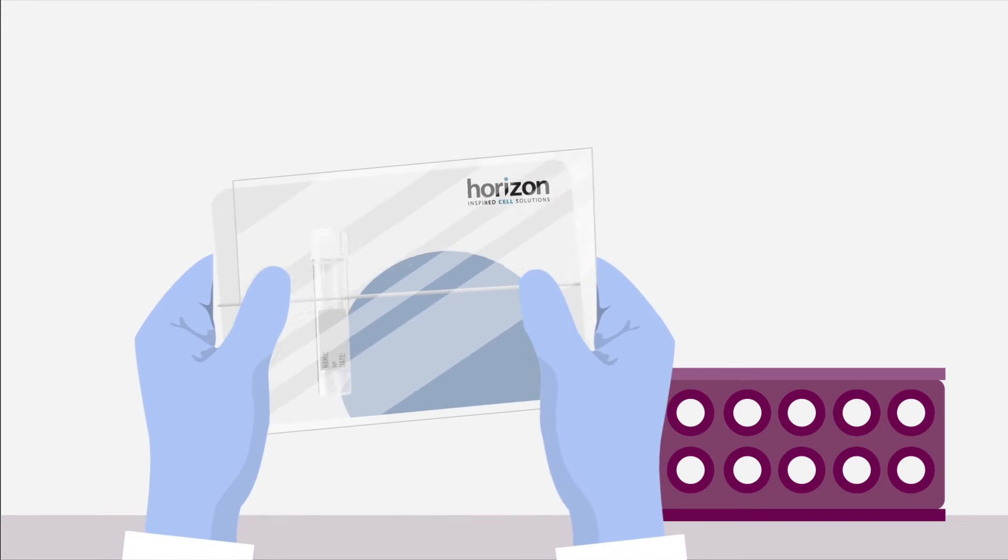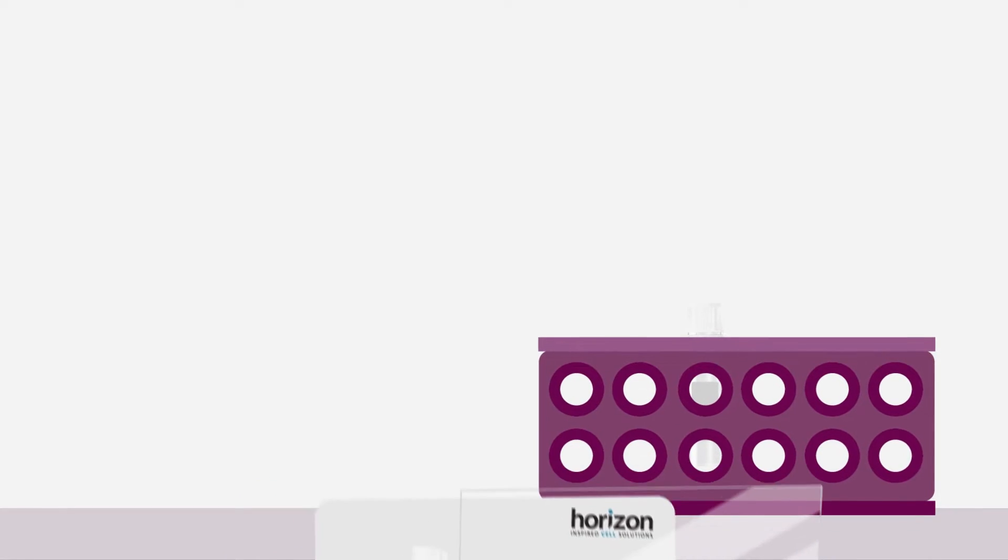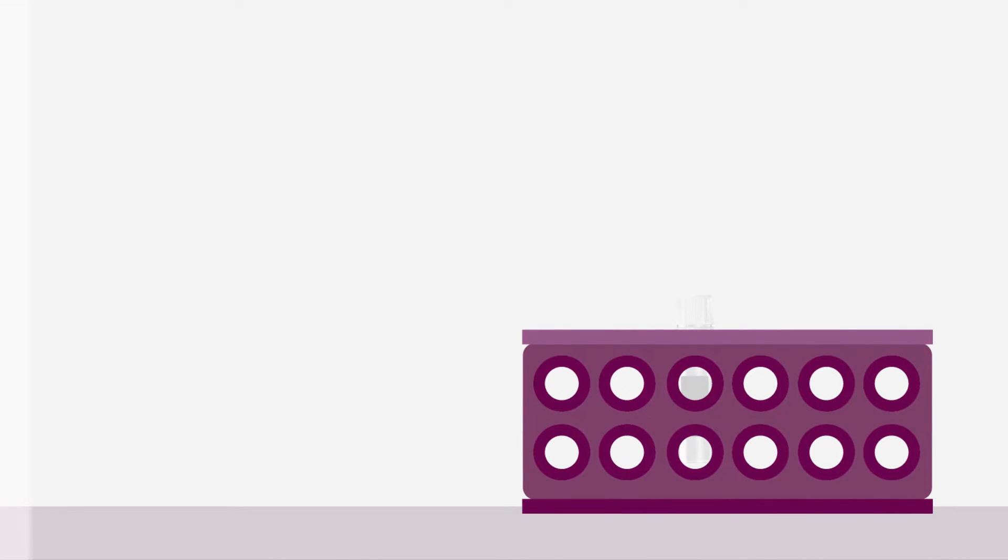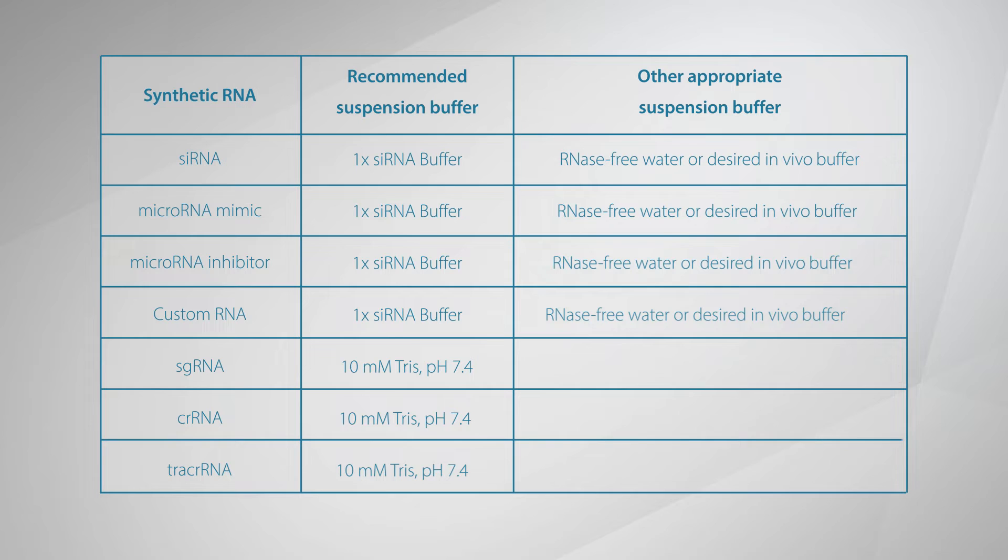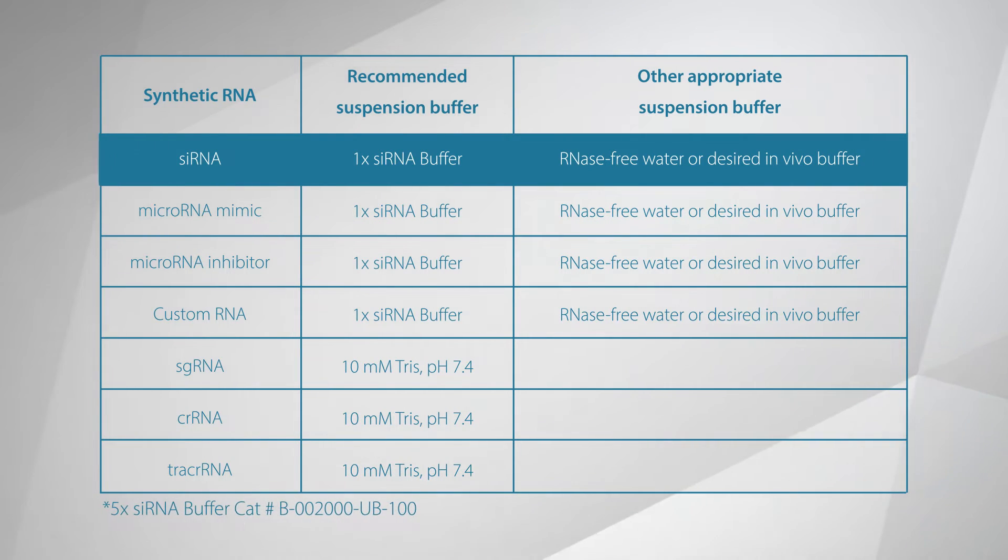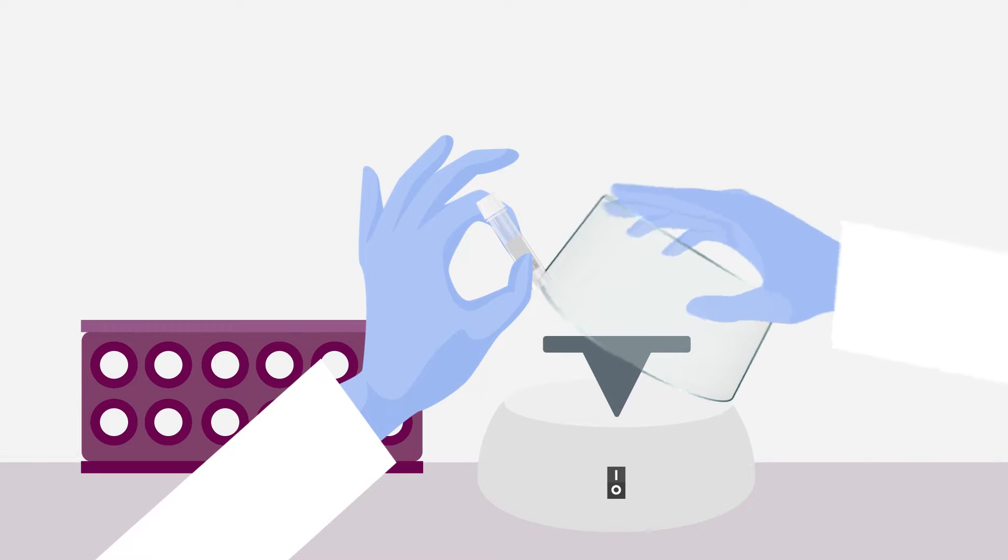Our synthetic RNA arrives dried down and must be resuspended before use. For the purpose of this video, we will walk through a calculation example for small interfering RNA or siRNA, but the basic process can be used with slight modifications for any synthetic RNA product from Horizon Discovery. Okay, let's get started. Choose the appropriate buffer for your synthetic RNA with this table. Using the wrong buffer may cause errors in your experiment. For siRNA, we recommend resuspending in 1x siRNA buffer or RNase-free water for short-term storage.